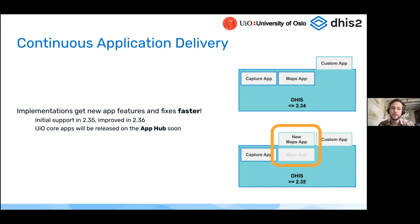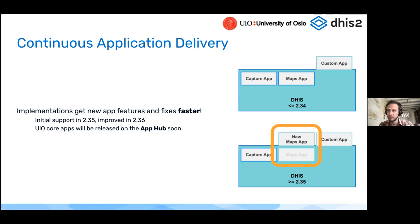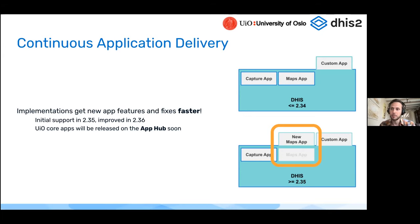The end result is that within 2.35, 2.36, and going forward to 2.37, implementations can get new app features and fixes much faster. To enable that, the UIO core applications will start to be released on the App Hub very soon. The app management app has been released on a limited basis to the App Hub and will roll out shortly. We'll be getting all of the other applications that the core team develops onto the App Hub in the near future, releasing them at a higher cadence — available for people running 2.37, 2.36, and 2.35.